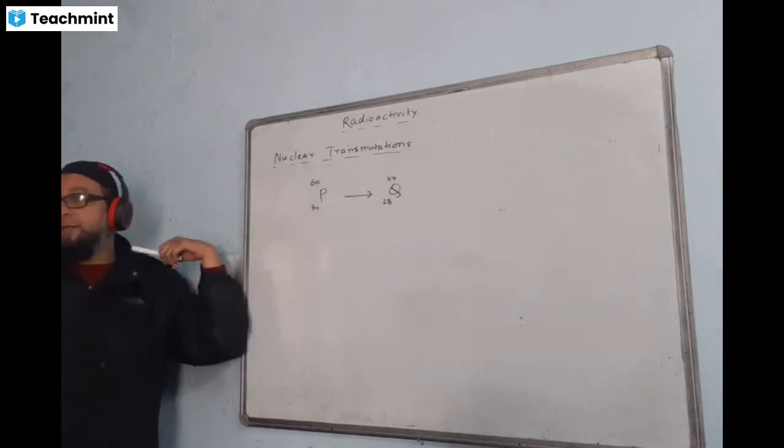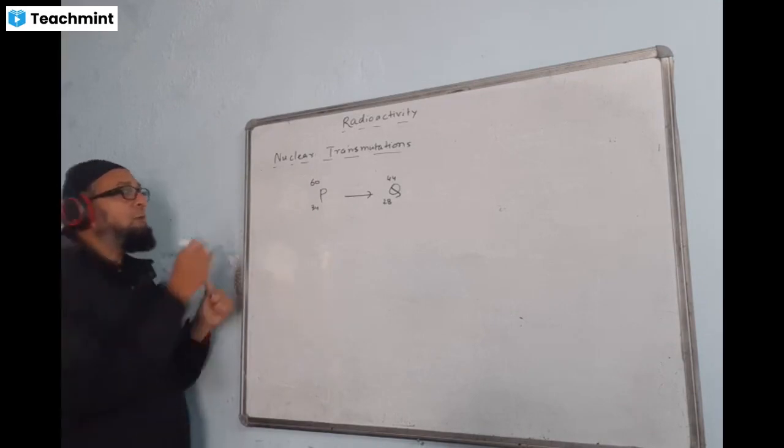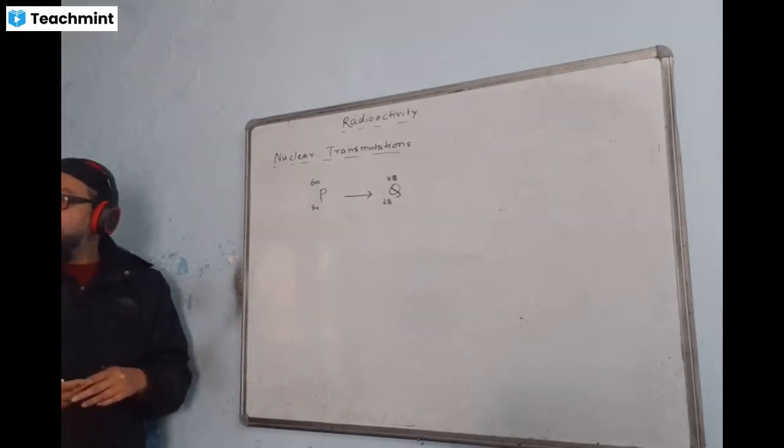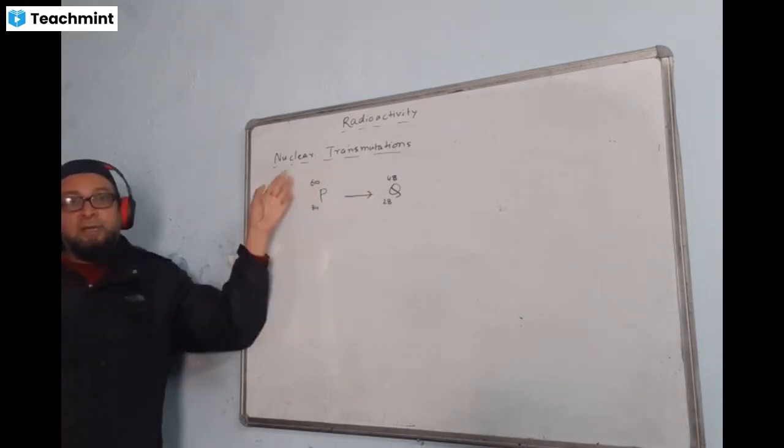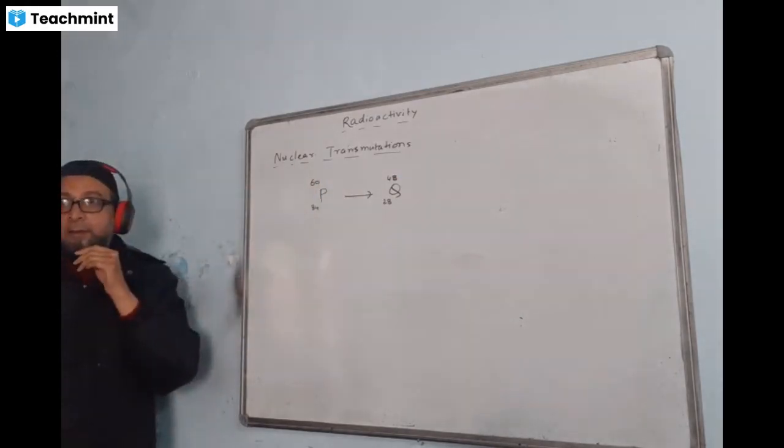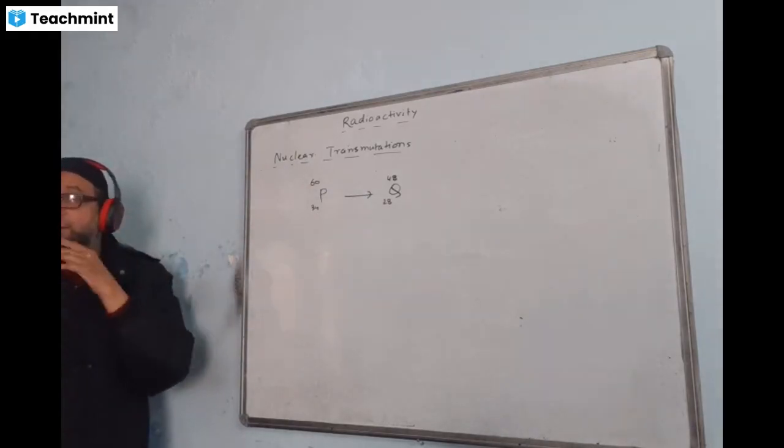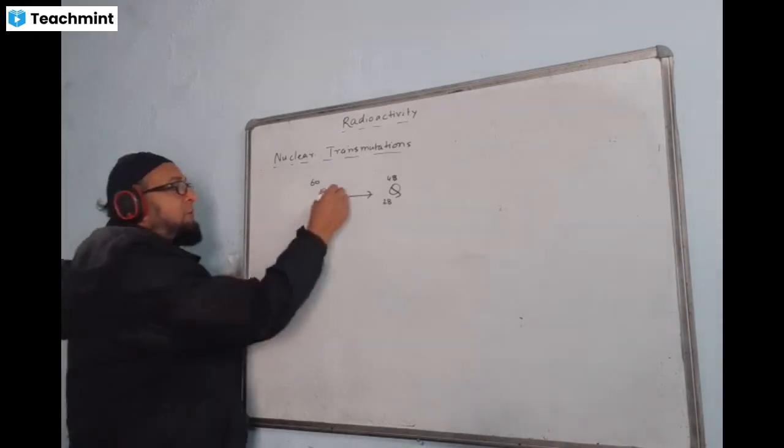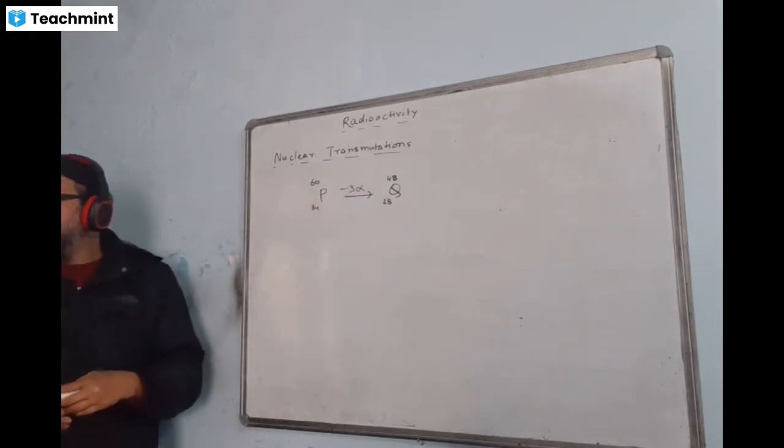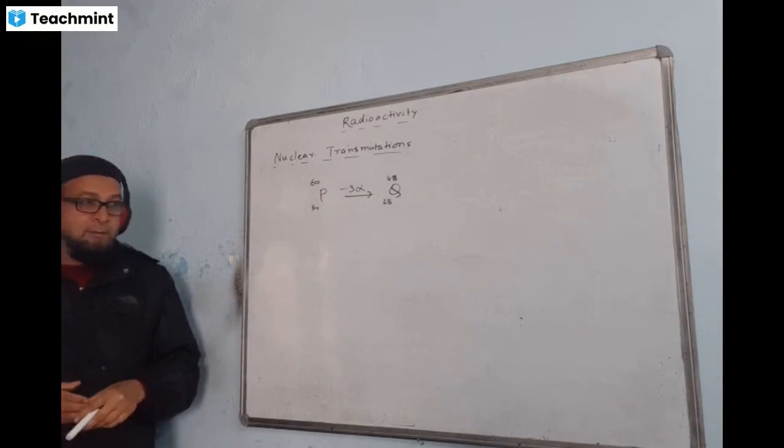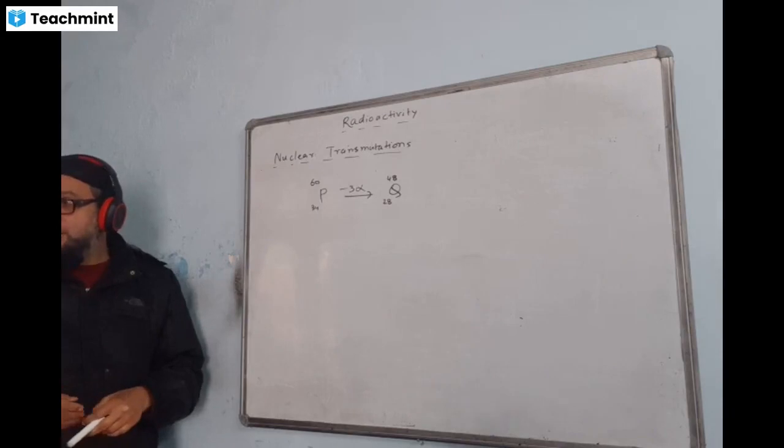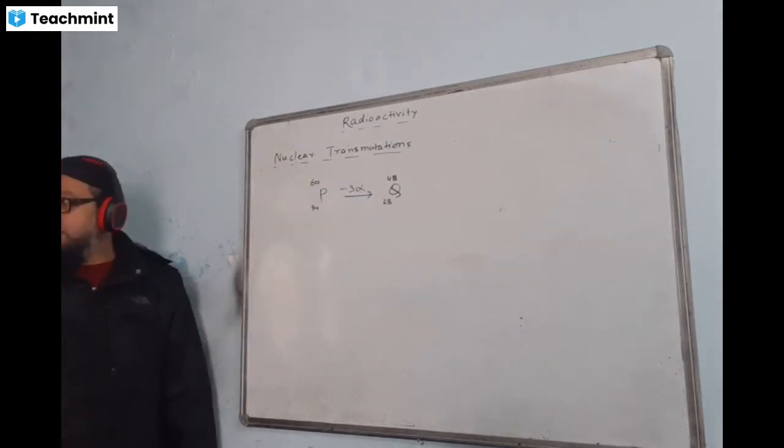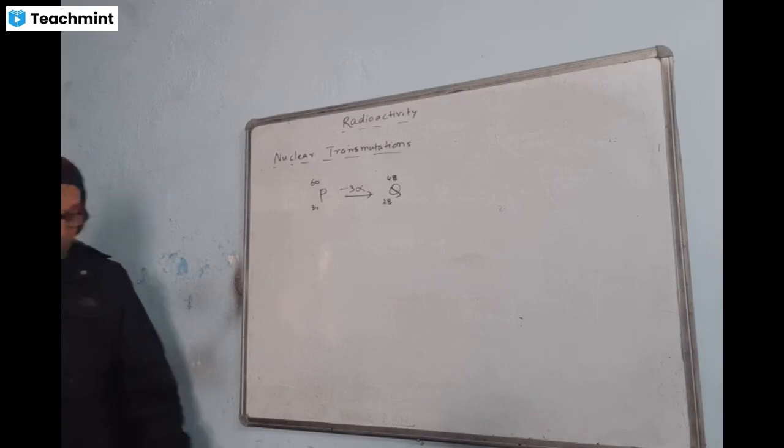34 minus 28, the difference is 6, so this should be 48. That means 60 minus 48, the answer is 12. And that one decreases by 4 when one alpha particle comes out. How many alpha particles came out? 3 alpha particles came out. It exactly matches, 34 minus 6 is 28, 60 minus 12 is 48.